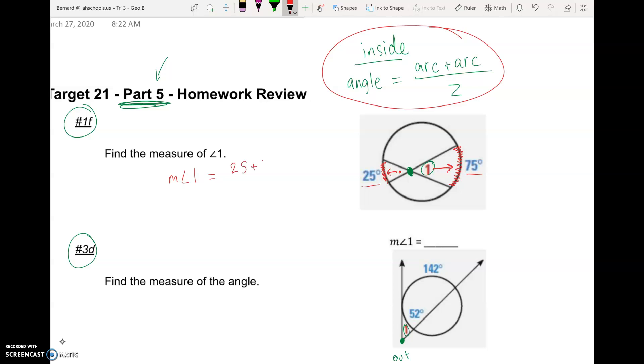So 25 plus 75 divided by 2. And 25 plus 75 is 100. And then 100 divided by 2 is 50 degrees. And so angle 1 is 50 degrees.